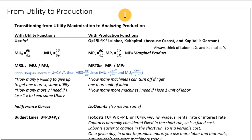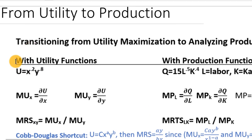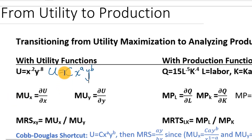On the left we have terminology and functions normally used with utility, and on the right are equivalents for production. Starting with a standard utility function, say U = X^0.2 × Y^0.8, the size of the exponents tells us how much each good contributes to utility — the bigger the exponent, the more that good contributes, ceteris paribus. We could also have a utility function with a constant multiplier, like U = C × X^a × Y^b, but with utility, that multiplier doesn't really change the person's preferences.